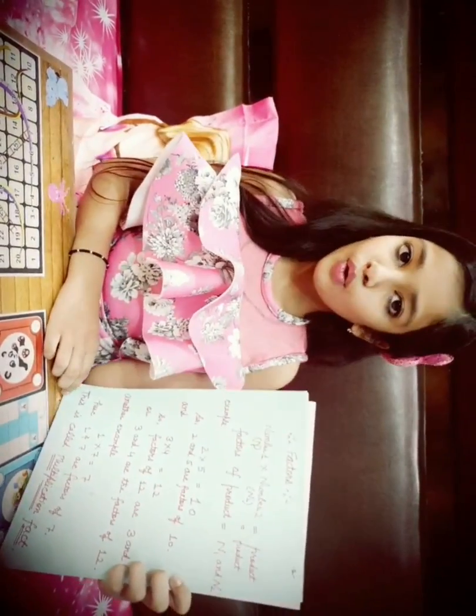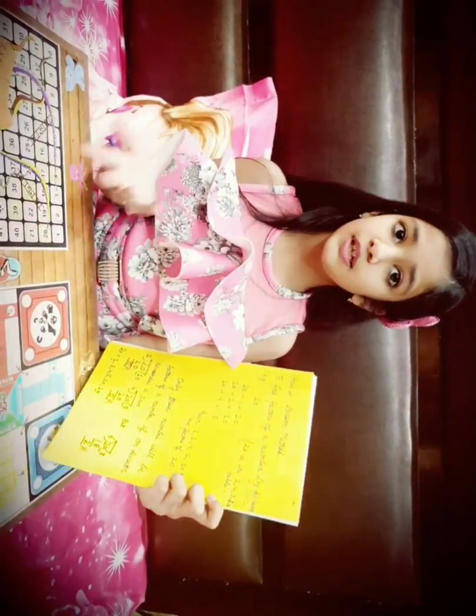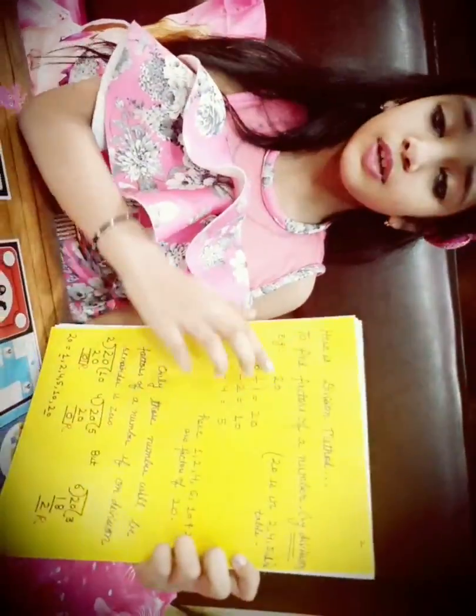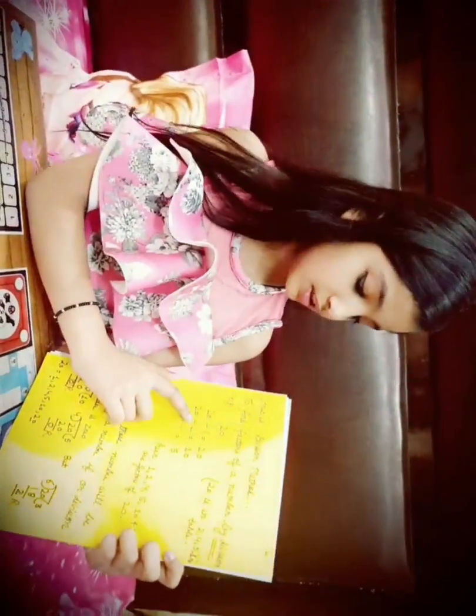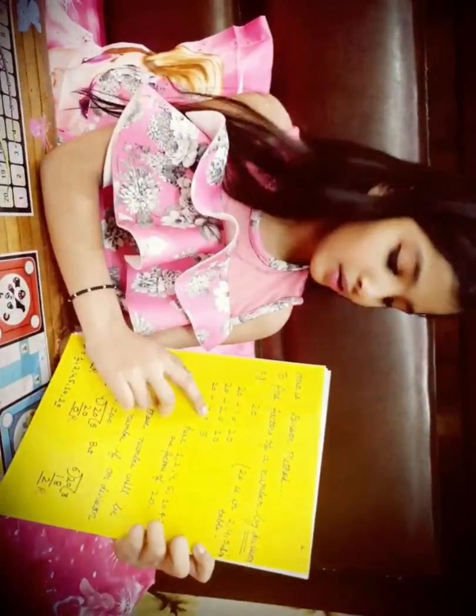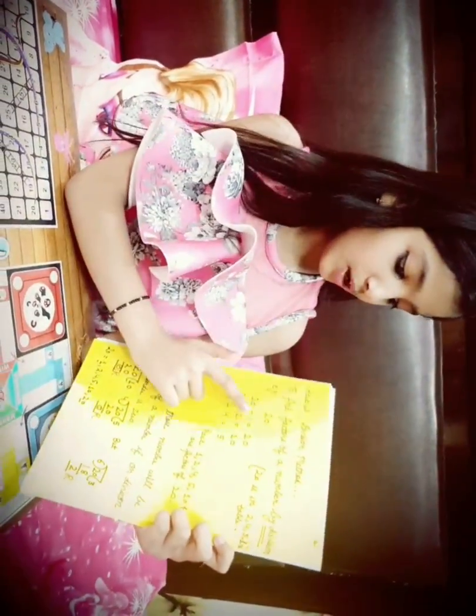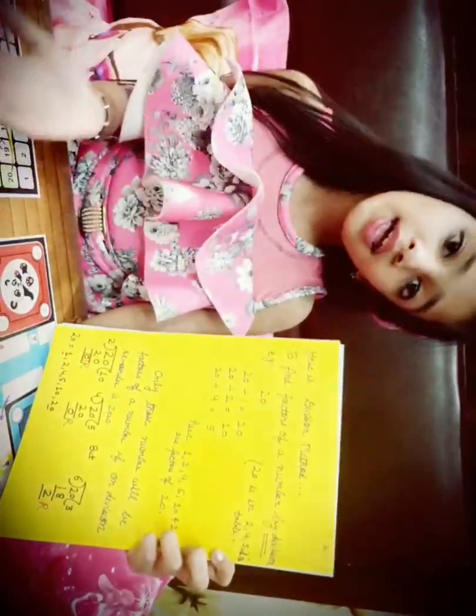This is called a multiplication fact. Here is the division method to find factors of any number. For example, we take twenty. Twenty divided by one is equal to twenty. Twenty divided by two is equal to ten. Twenty divided by four is equal to five. So one, two, four, five, ten, and twenty are the factors of twenty.